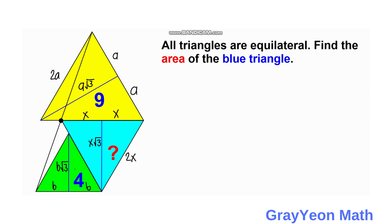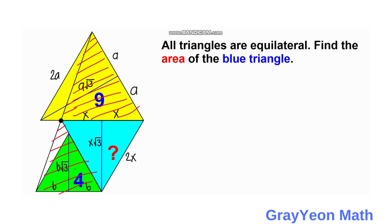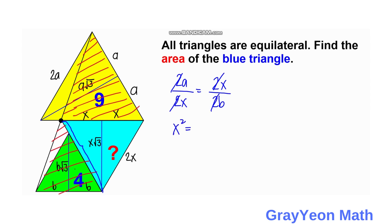Next, we use similarity of triangles. The big triangle and the smaller triangles are all similar. For the yellow, the corresponding side is 2A over 2X. For the smaller, we have 2X over 2B. We cancel the 2s on both sides, and if we cross multiply, we get X squared is equal to AB.